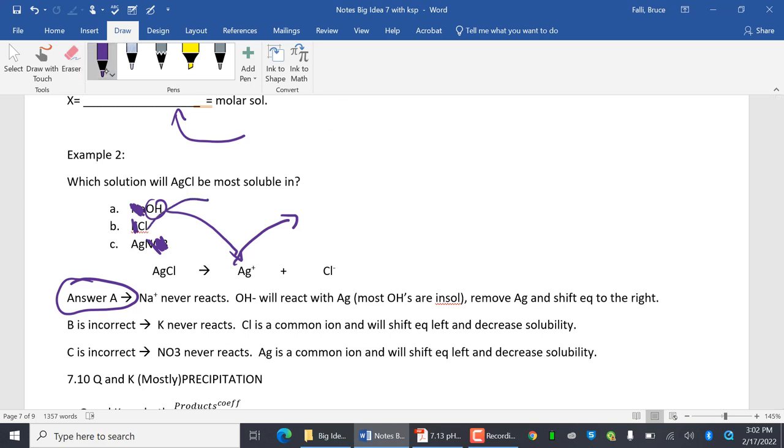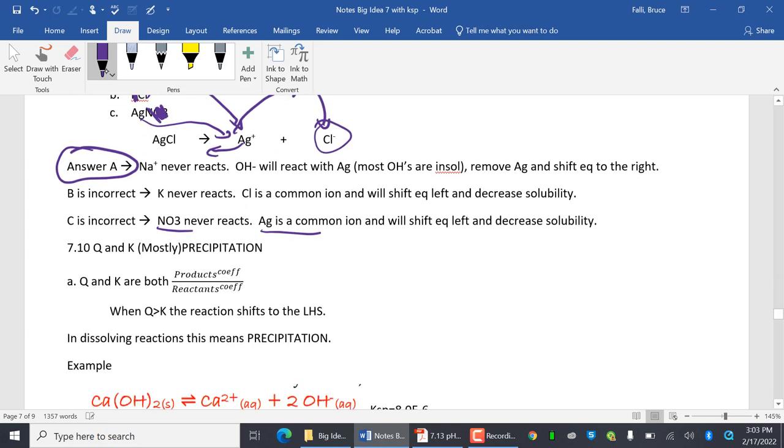So if I'm increasing Cl, it's going to shift it to the left. My bad. C is incorrect. Nitrate never reacts. Ag is a common ion, so it'll shift it to the left. So when you create a common ion, it'll shift away.